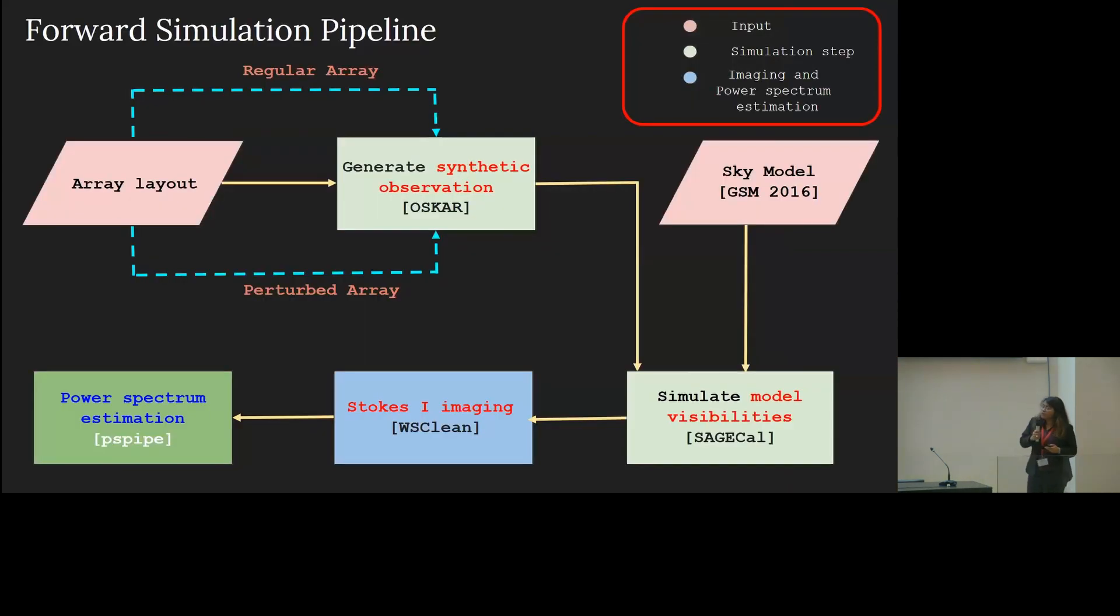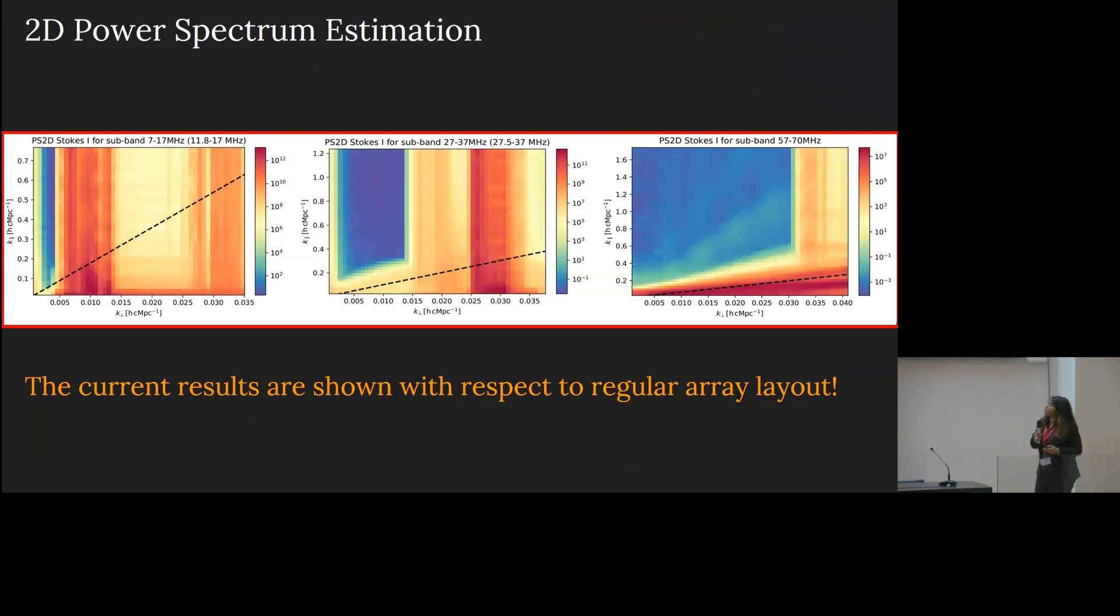Then finally, we generate a cylindrically average power spectrum with a pipeline called PSPype. And here you see the 2D power spectrum for a regular array layout that ALO will see. And if you remember, Christian has already showed in his talk that you may find the resemblance of a foreground wedge here. And the blue region here is the region where we actually want to have high sensitivity in order to detect the 21-centimeter signal. So, the takeaway message from this slide is that this result validates the expected result that we want to have and also provide us like a sanity check if the simulation pipeline is actually giving us the correct result or not.